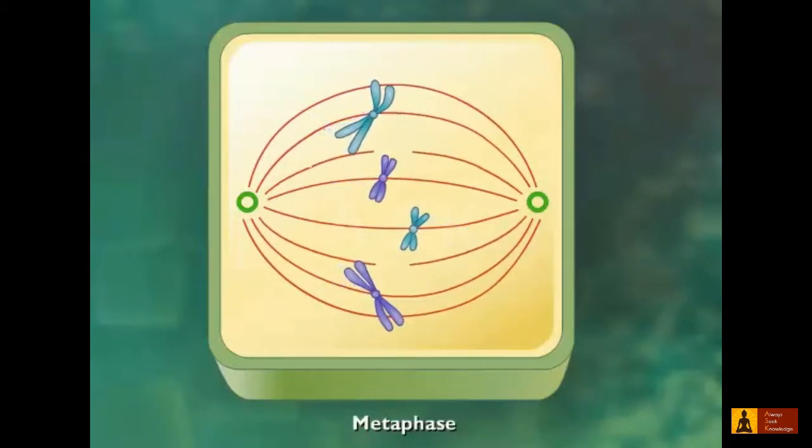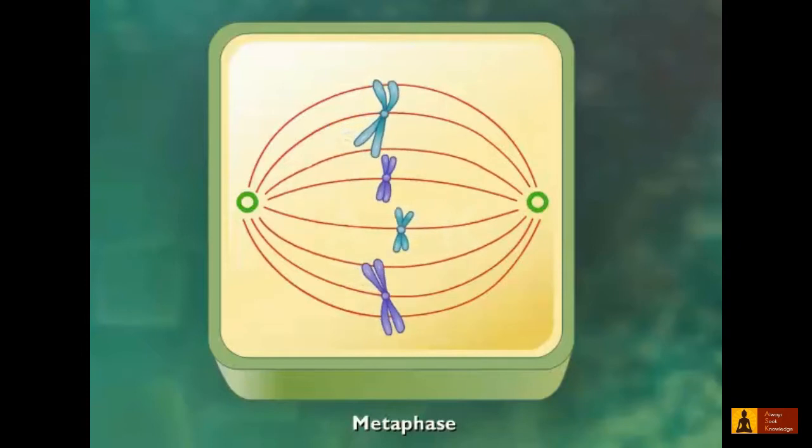During metaphase, the chromosomes become attached to the mitotic spindles at the kinetochores and align along the metaphase plate at the equator of the cell.